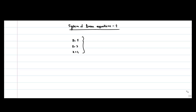Hello, so let us observe the fourth example of a system of linear equations. Here we have three equations: z equal to 5, z equal to 3, and x equal to 4. We are considering these three equations in three variables x, y, and z. Although there is no y variable in these three equations, we can say that the coefficient of y in these equations is 0.